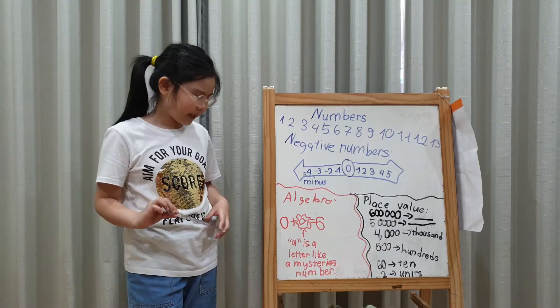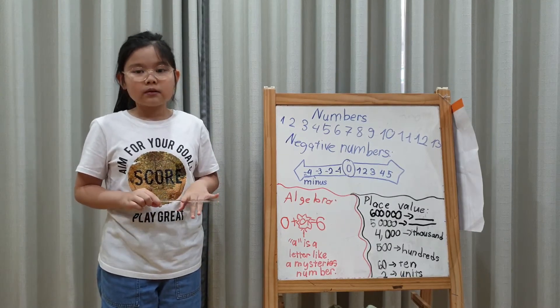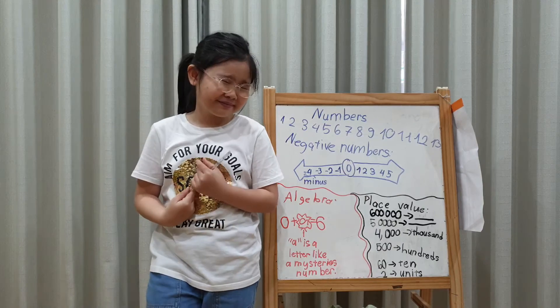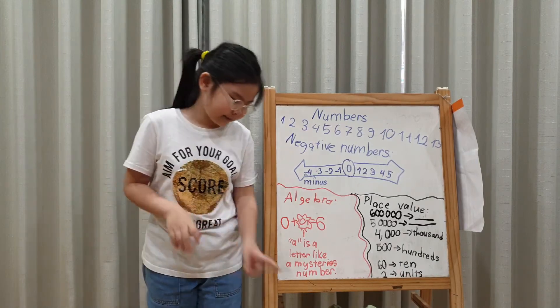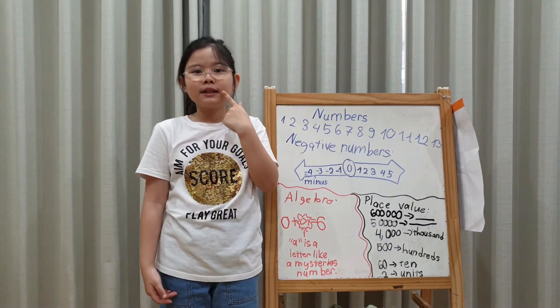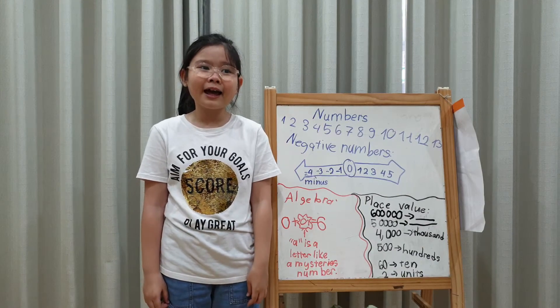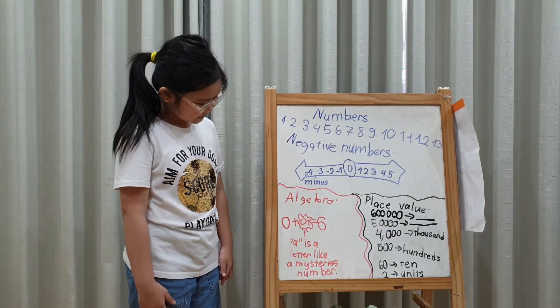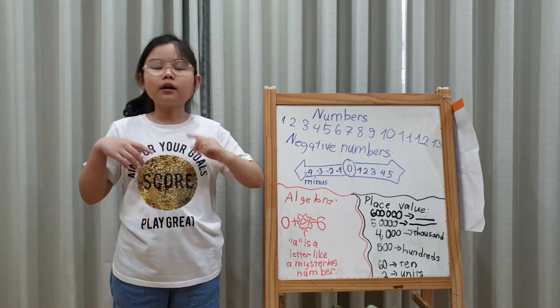0 plus something, it cannot be different. Because 0 is nothing. Like, I have 0 books. So, that means I don't have any books. Think a bit. 0 plus something equals 6. A clue for you. It must have the same number as 6. So, you all know. My answer: 0 plus 6 equals 6. It's easy.